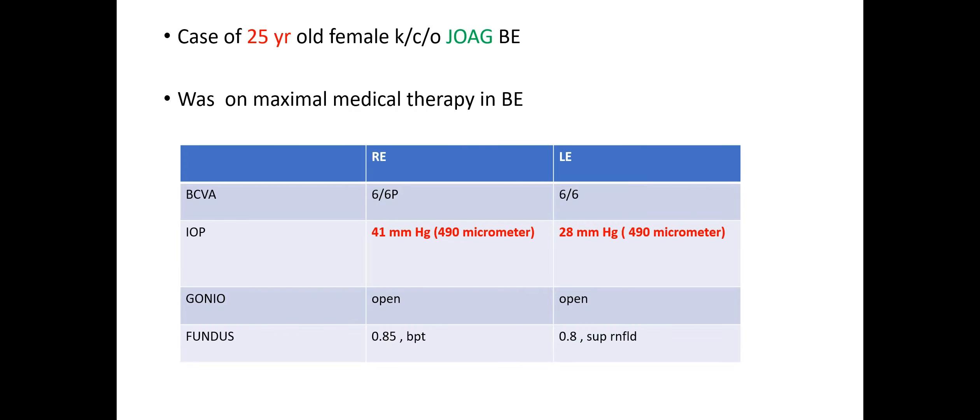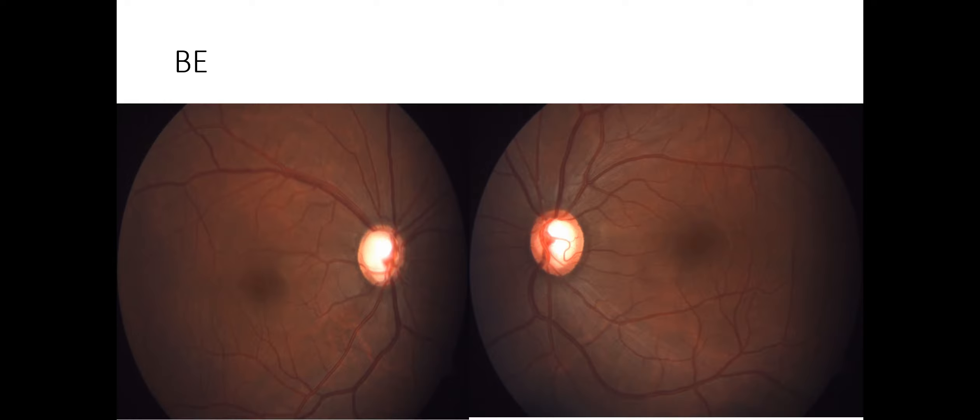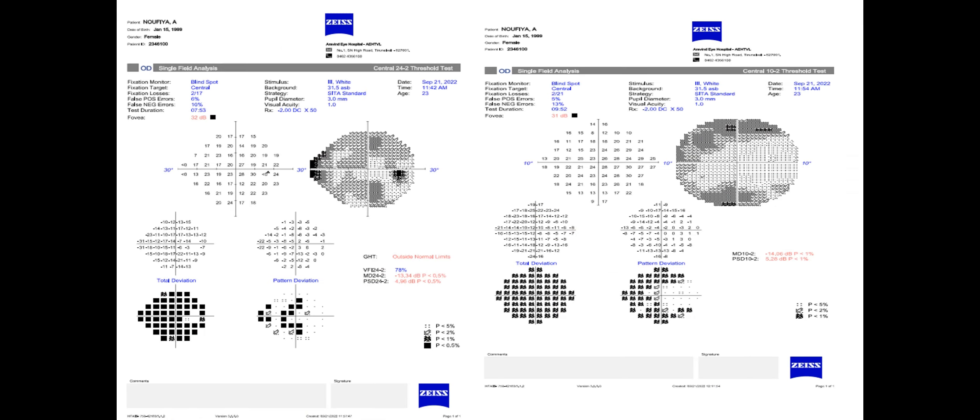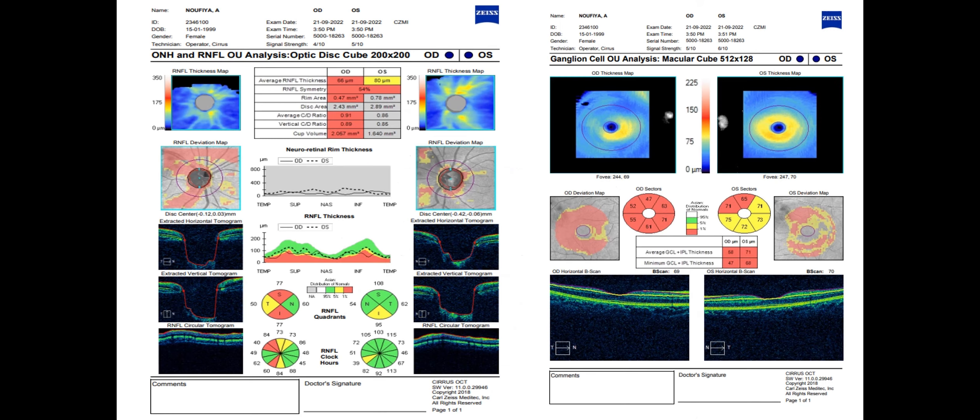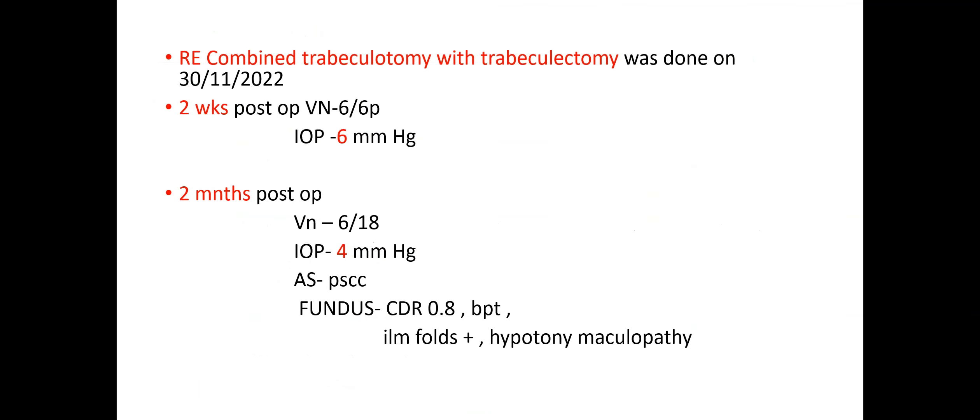Here is a 25-year-old female diagnosed with juvenile open-angle glaucoma in both eyes with advanced cupping and uncontrolled intraocular pressure despite maximal medical therapy. The fundus picture shows advanced cupping in both eyes with advanced field defect in both eyes and early field defect in left eye. The patient underwent right eye combined trabeculotomy with trabeculectomy.